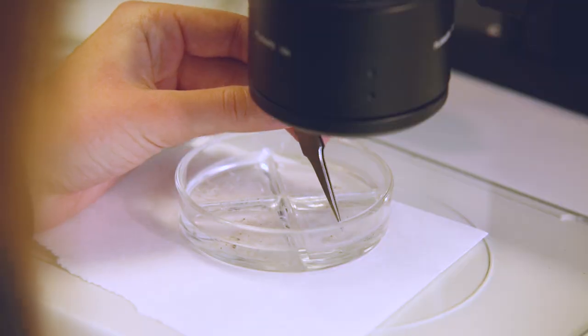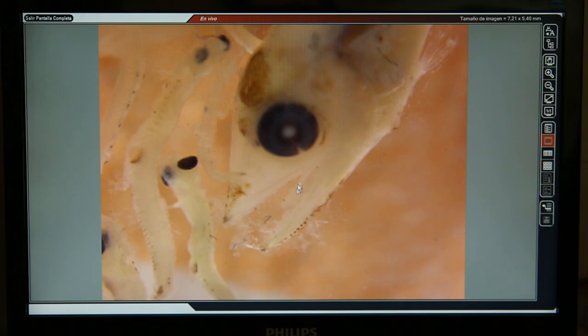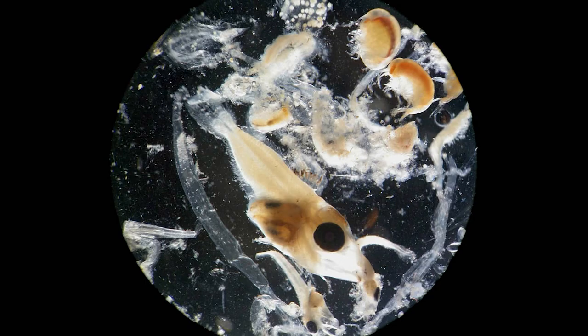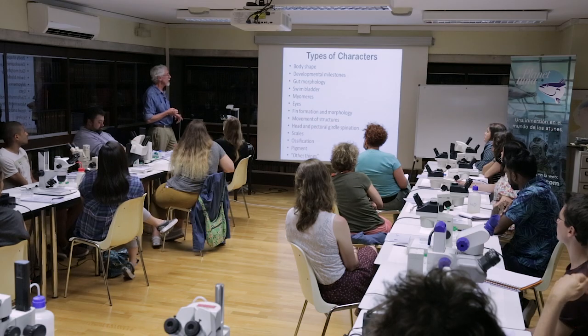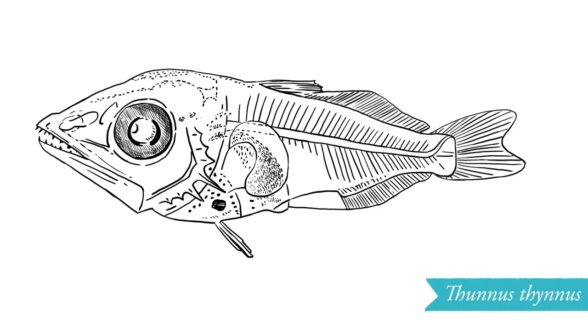What you're seeing under the microscope is not necessarily what's out there in the ocean. The types of characters we're talking about — body shape, developmental milestones, gut morphology, the swim bladder and where it is, the medial fins, and the paired fins.